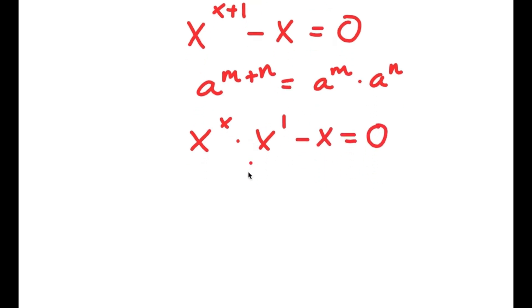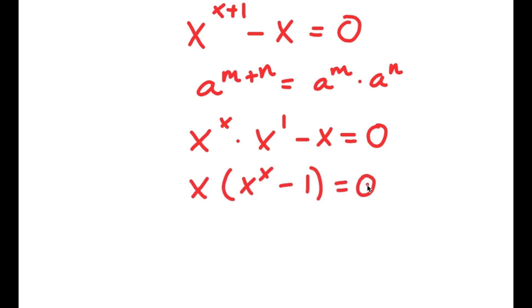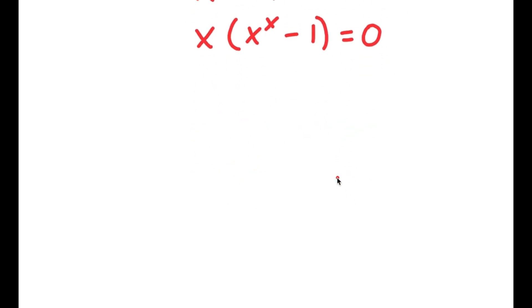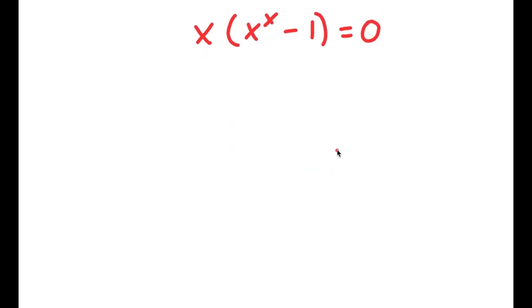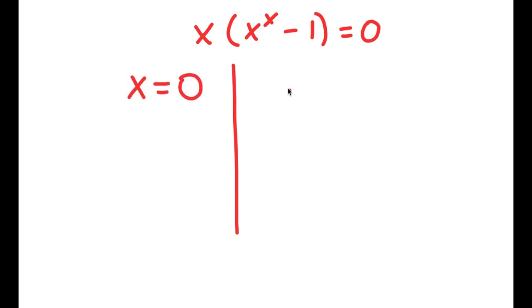Factoring out x, I get x times x to the power of x minus 1 equals 0. This gives me two equations: x equals 0, and x to the power of x minus 1 equals 0.